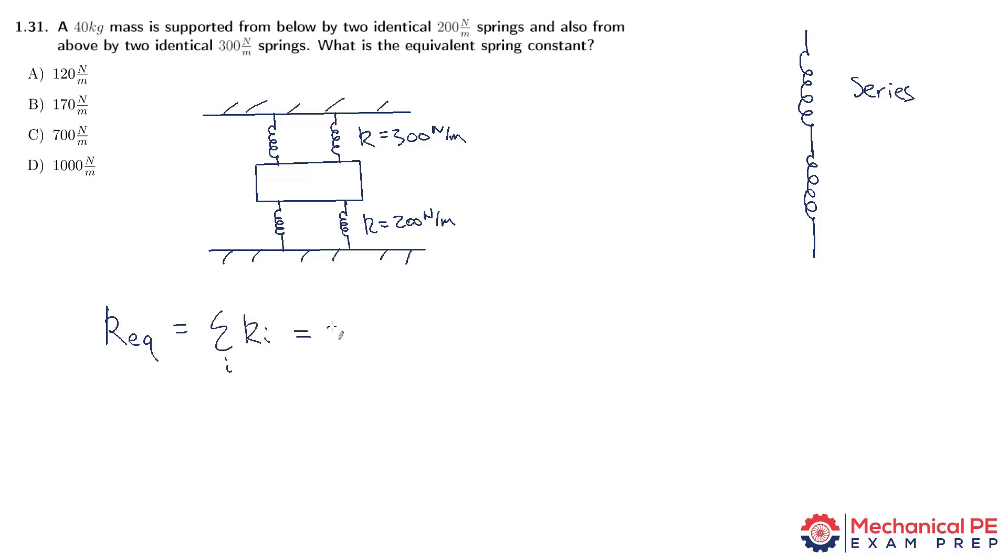All we're doing here is just adding them up. 2 times 200 newton per meter plus 2 times 300 newton per meter. And that gives us a total equivalent spring constant of 1000 newton per meter. The best answer choice is D.